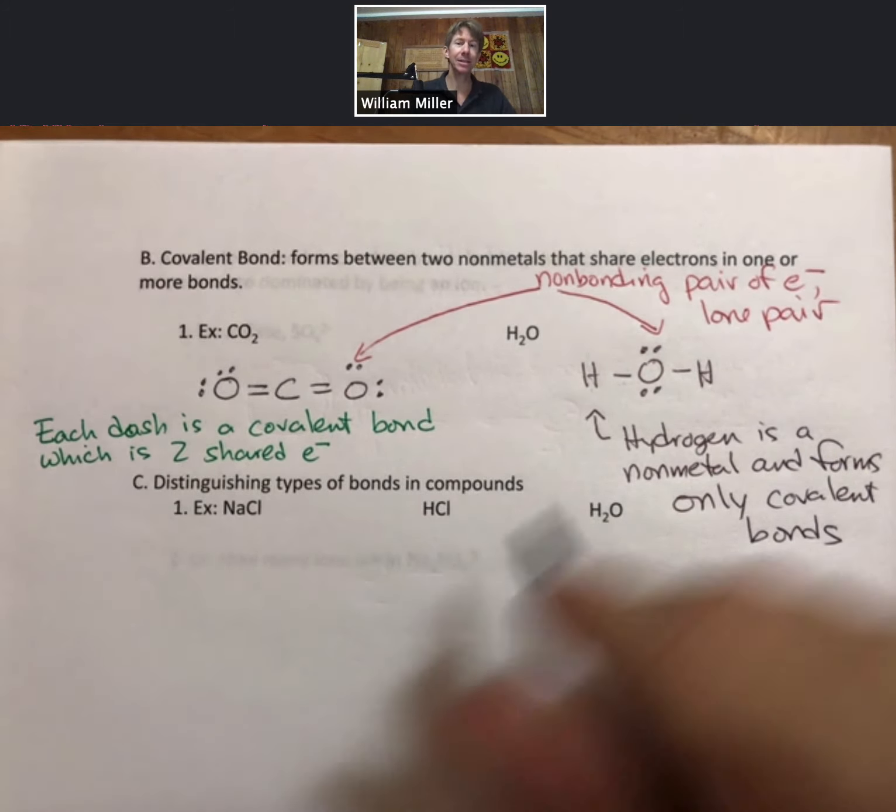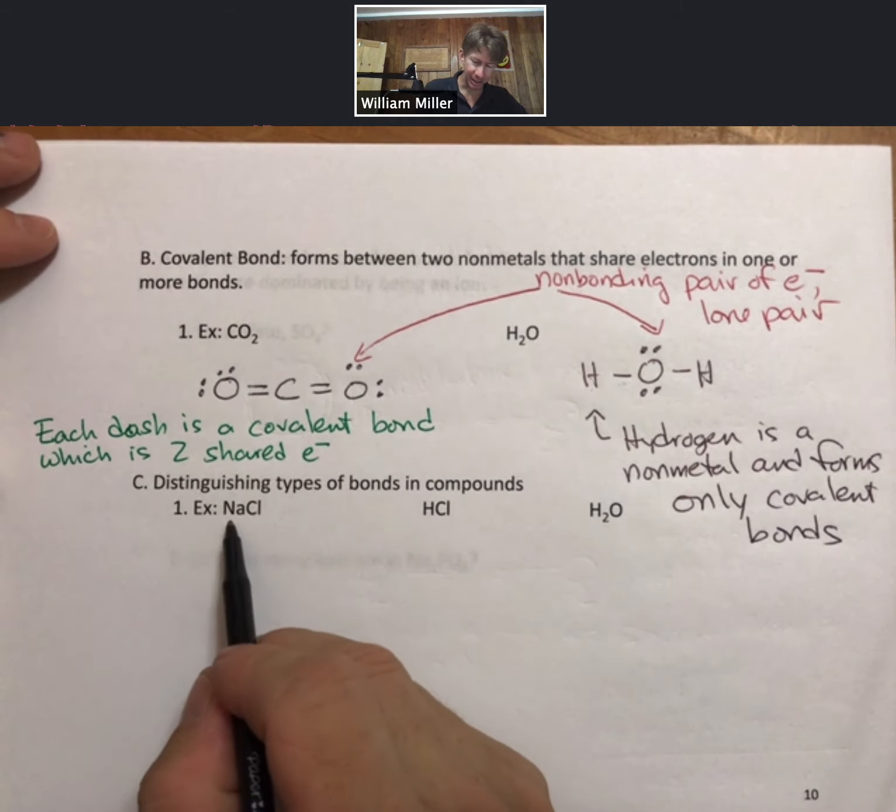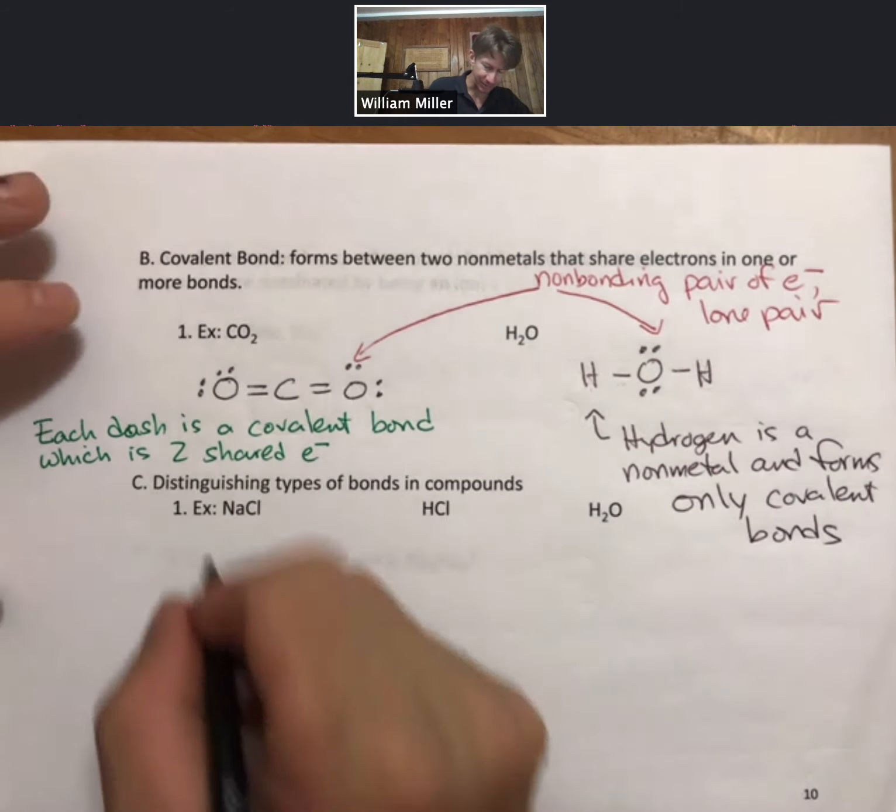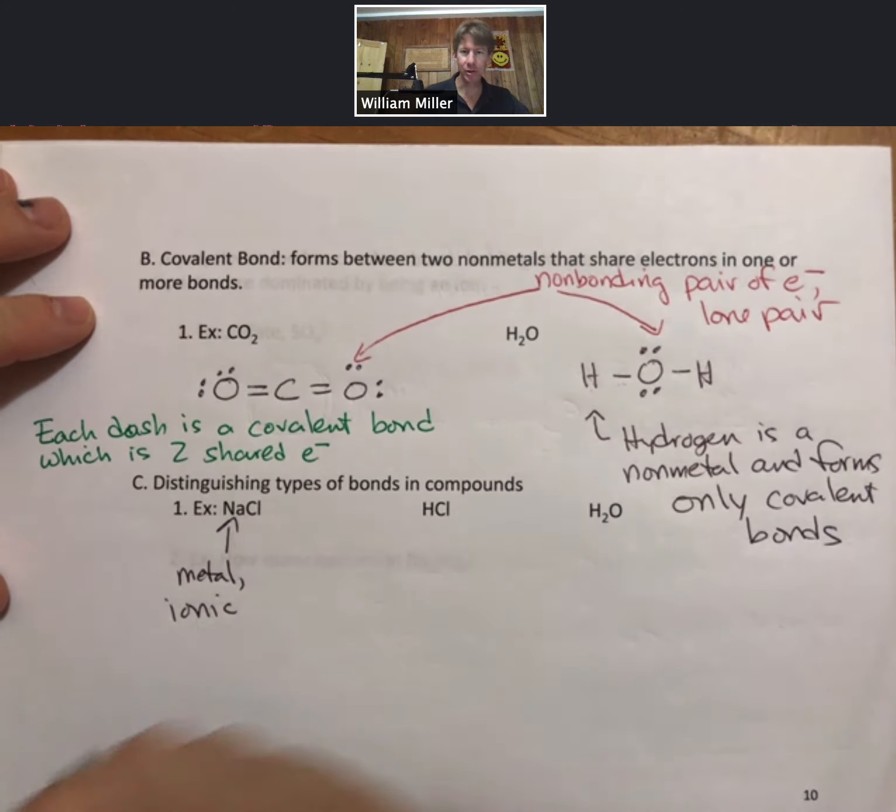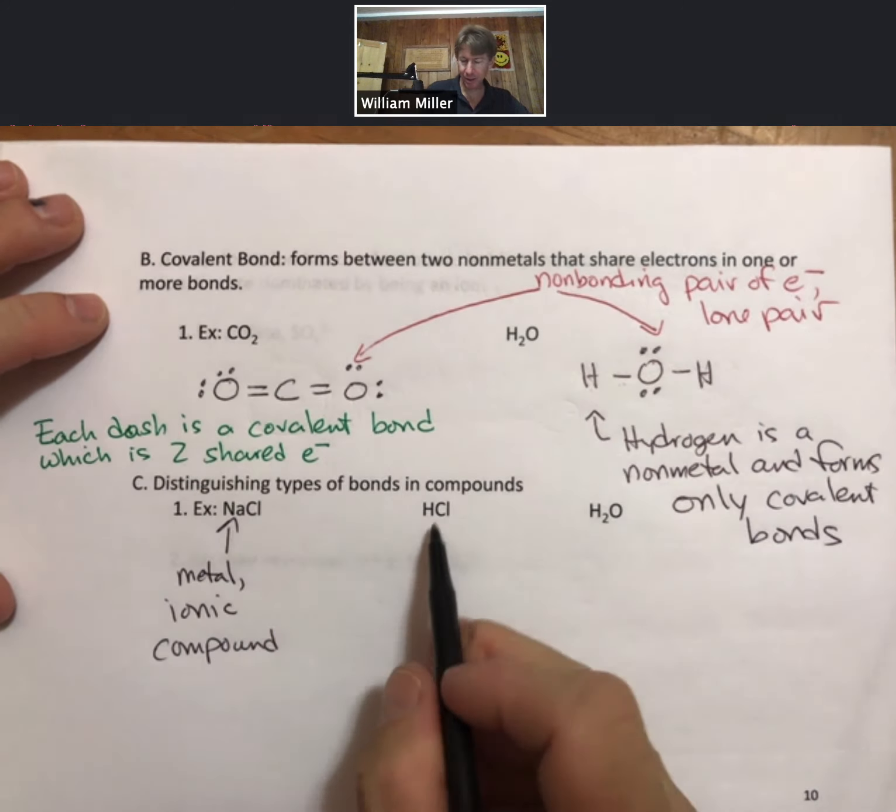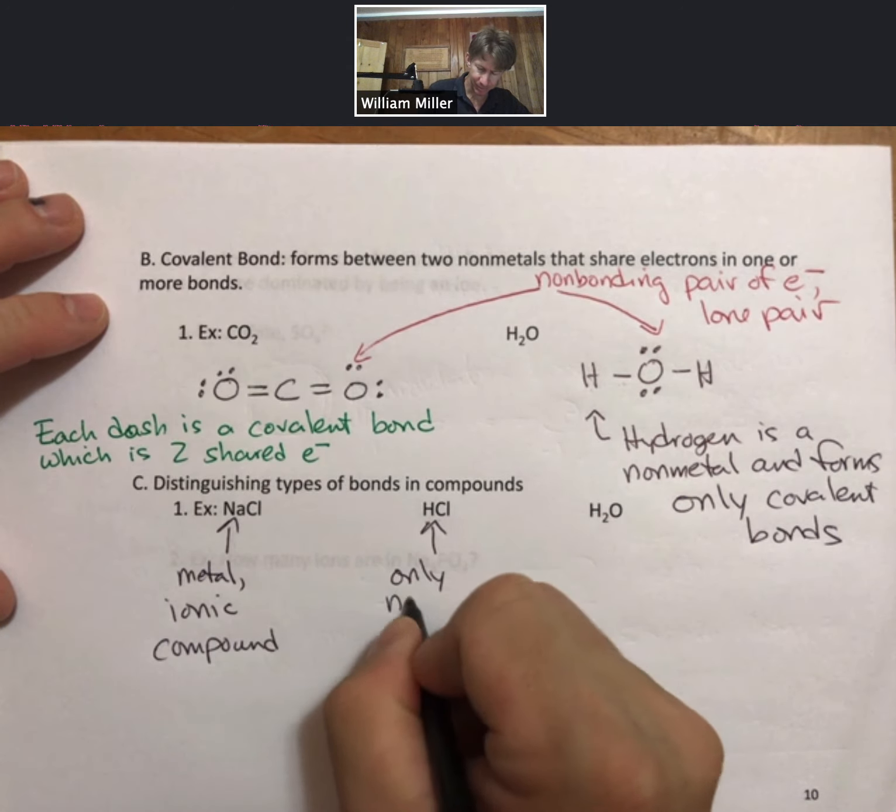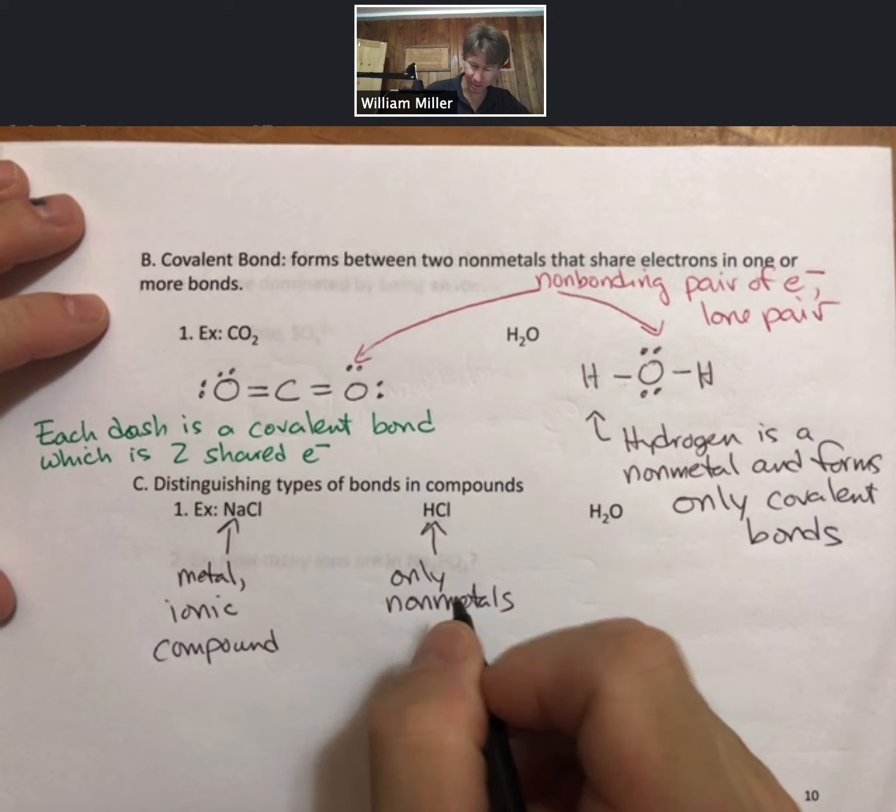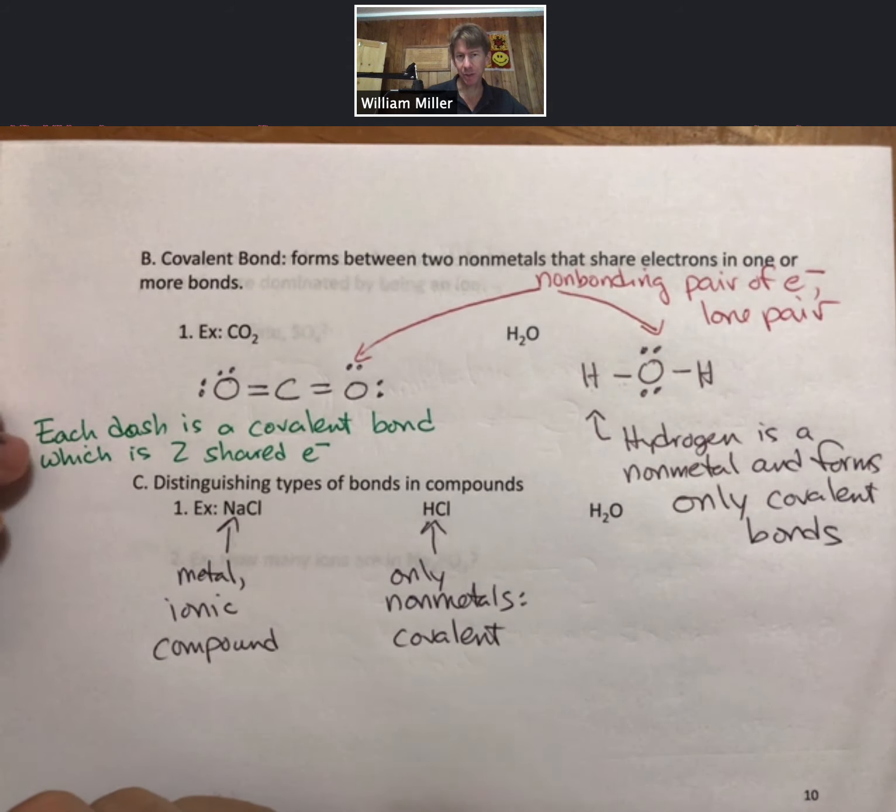This is an important concept to be able to grasp—what's the difference between an ionic bond and a covalent bond, or an ionic compound and a covalent compound. We said that in ionic compounds there's a metal, so key in on the metal and you'll know it's an ionic compound. Here nonmetal-nonmetal, only nonmetals—where again hydrogen is a nonmetal—this is a covalent compound with covalent bonds.